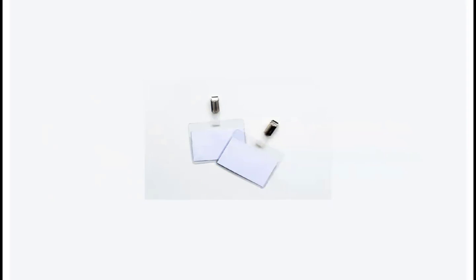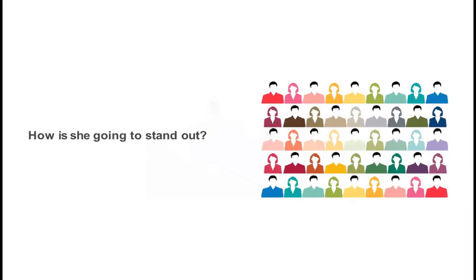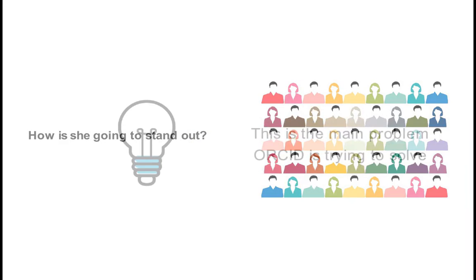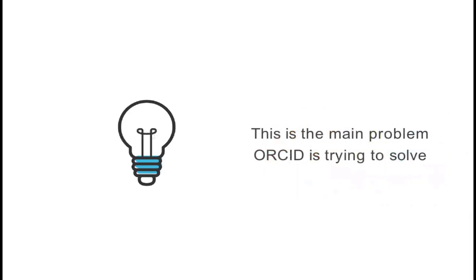That happens because databases, the internet, and other resources link research outputs with the researcher's name. Names can change over time and can be expressed in different ways. This is the main problem that ORCID is trying to solve.